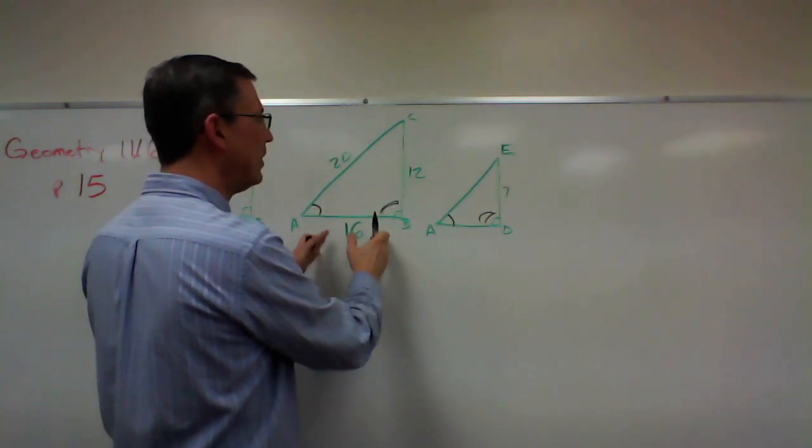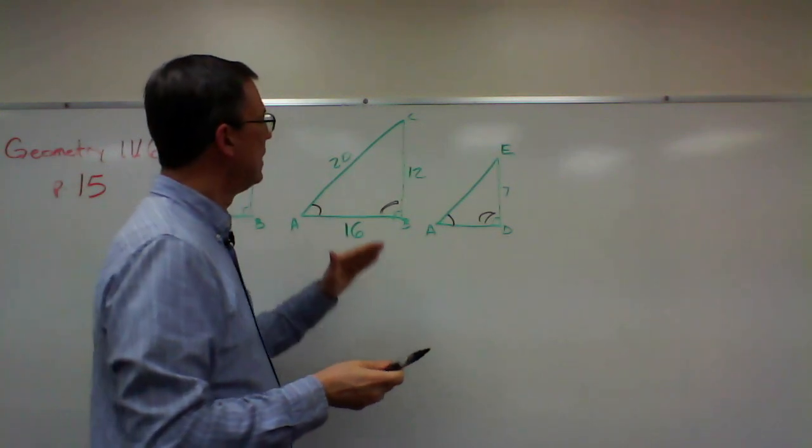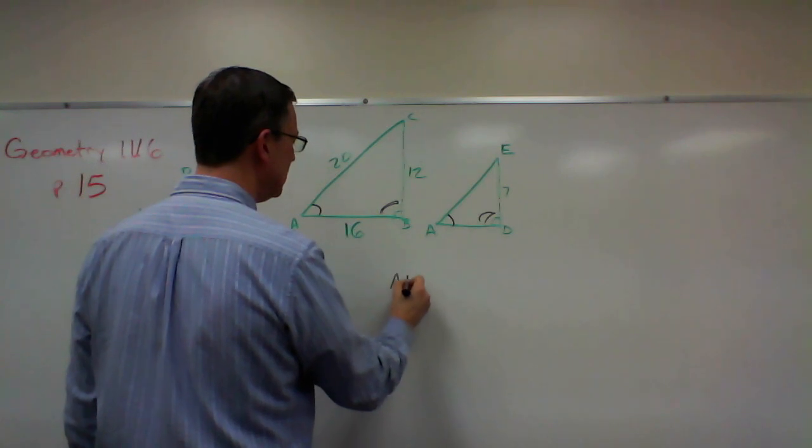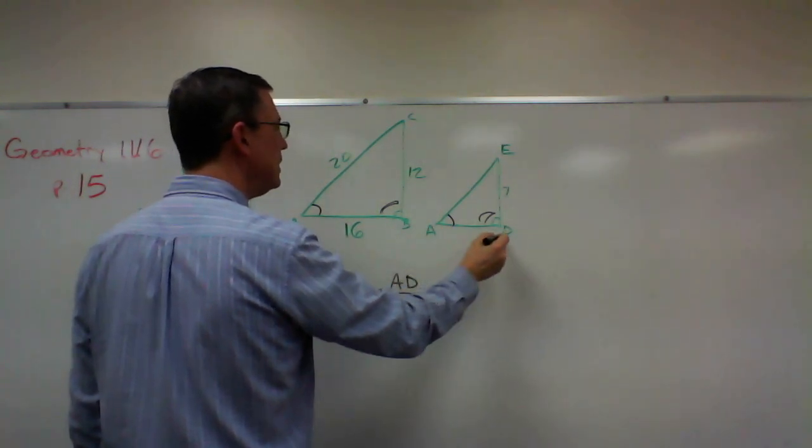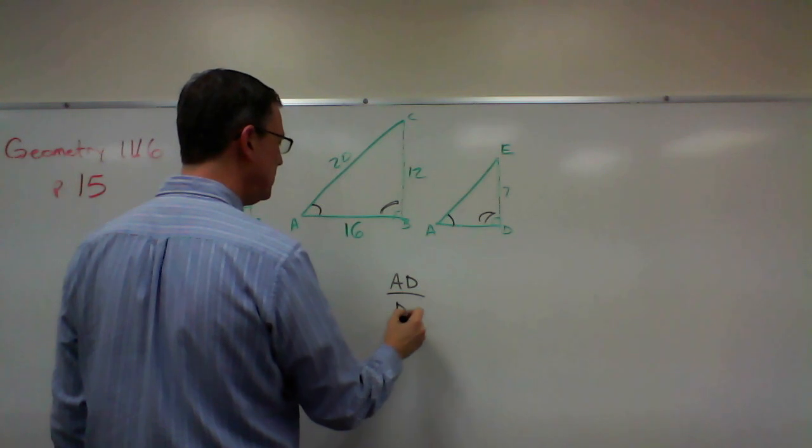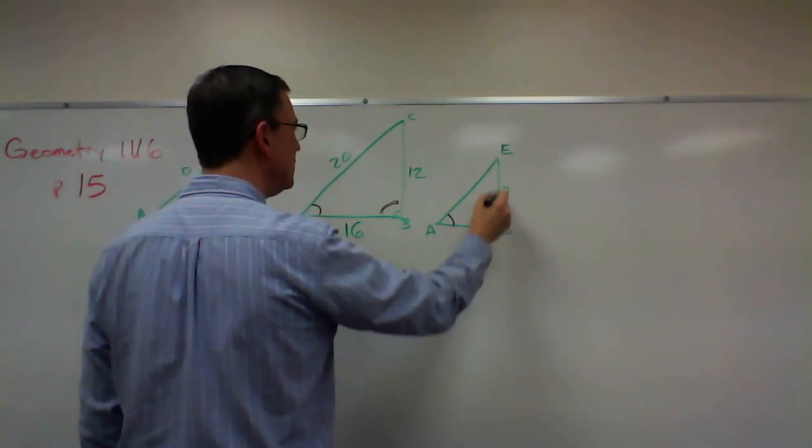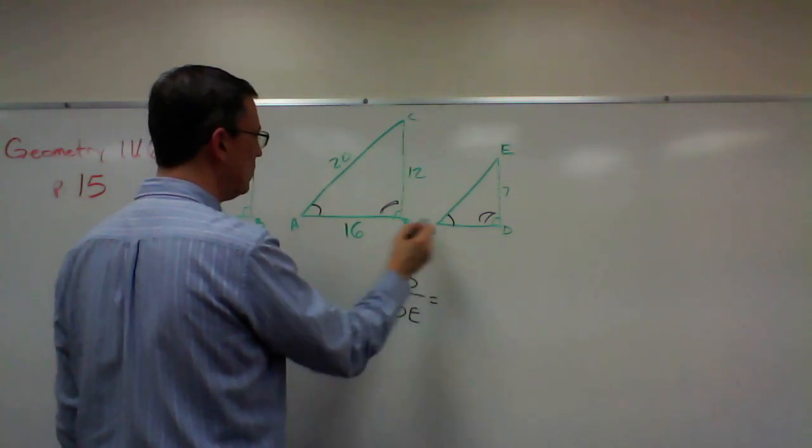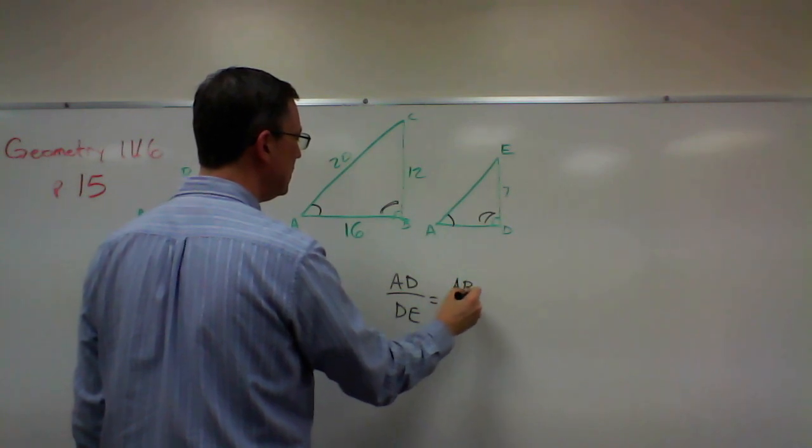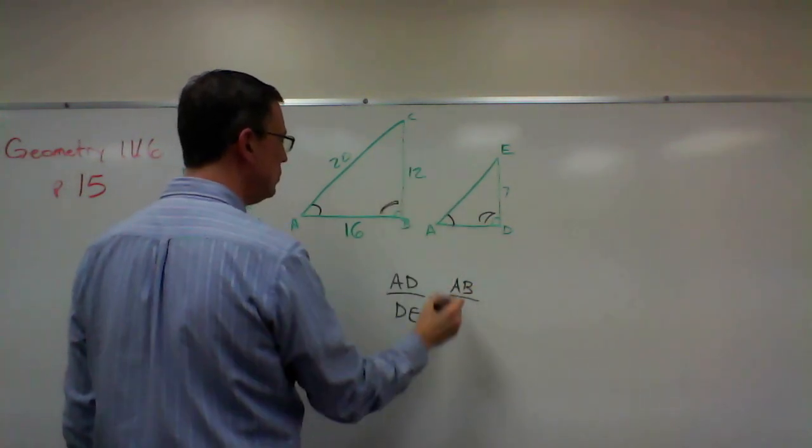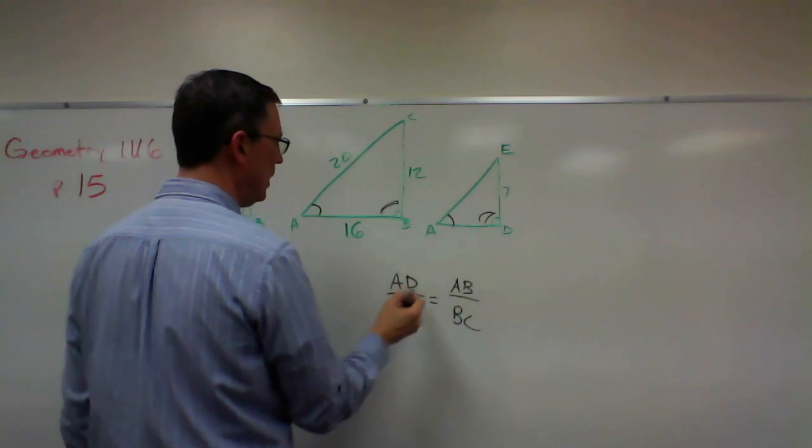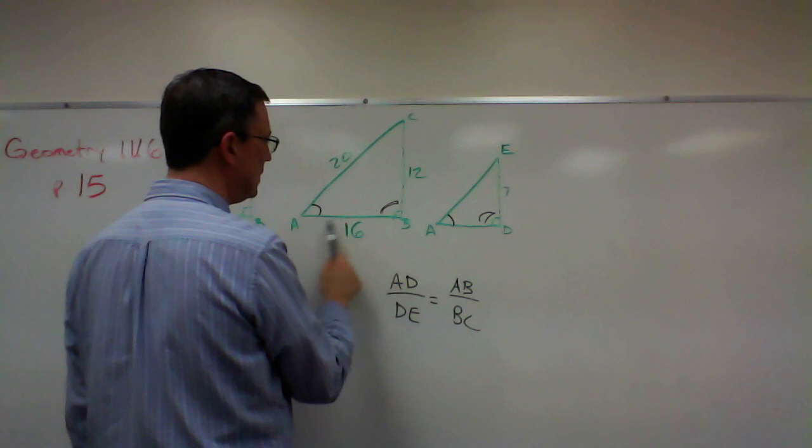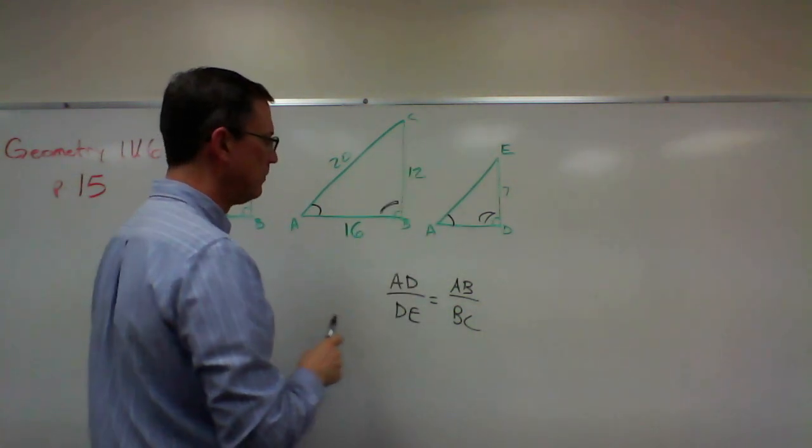Let's say I want to solve for AD. So AD is to DE. Let's go over here and see what side corresponds to AD. That would be AB corresponds to BC. I'm taking this side corresponds to this side as AB corresponds to that side.